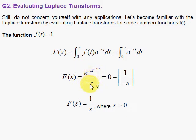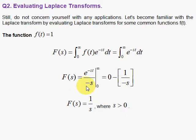e to minus st over minus s. Evaluate at the limits of integration here. At infinity, that's going to be 0. And at 0, that's going to be 1. And you have then minus s in the denominator. And when you subtract, you get 1 over s.